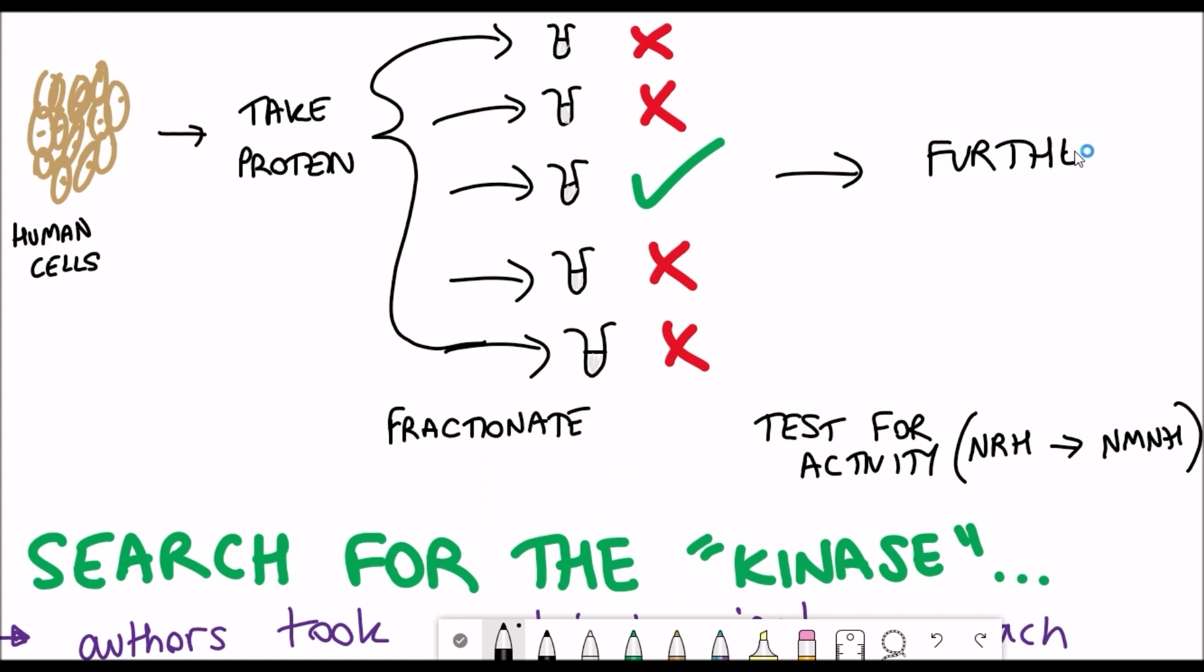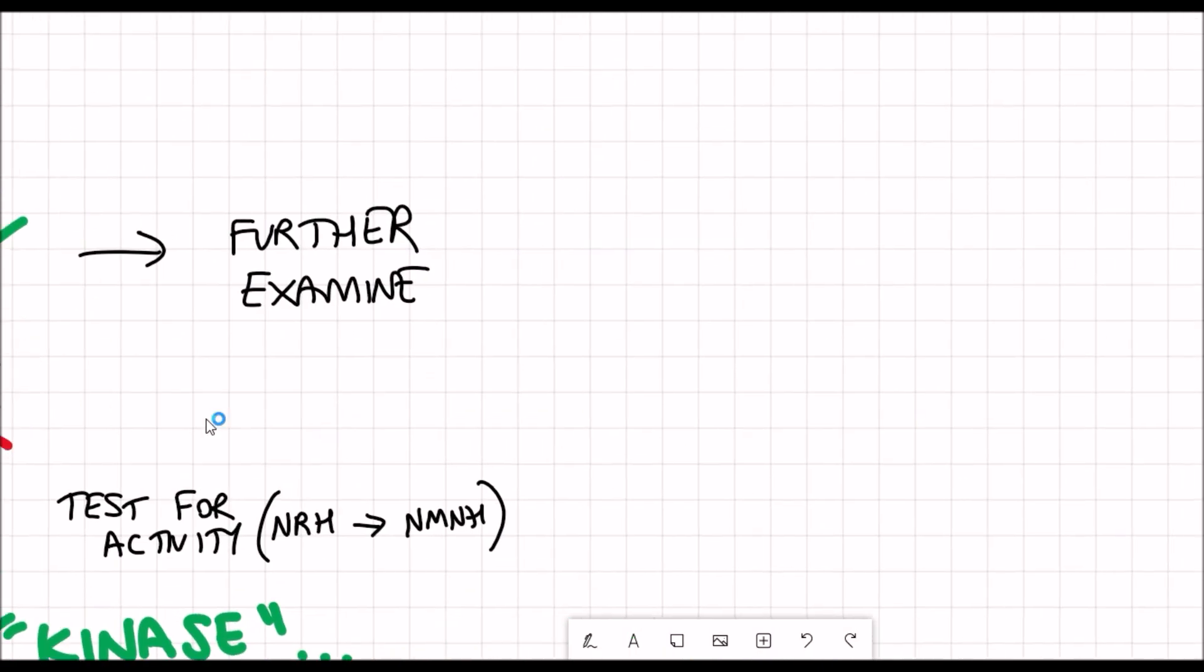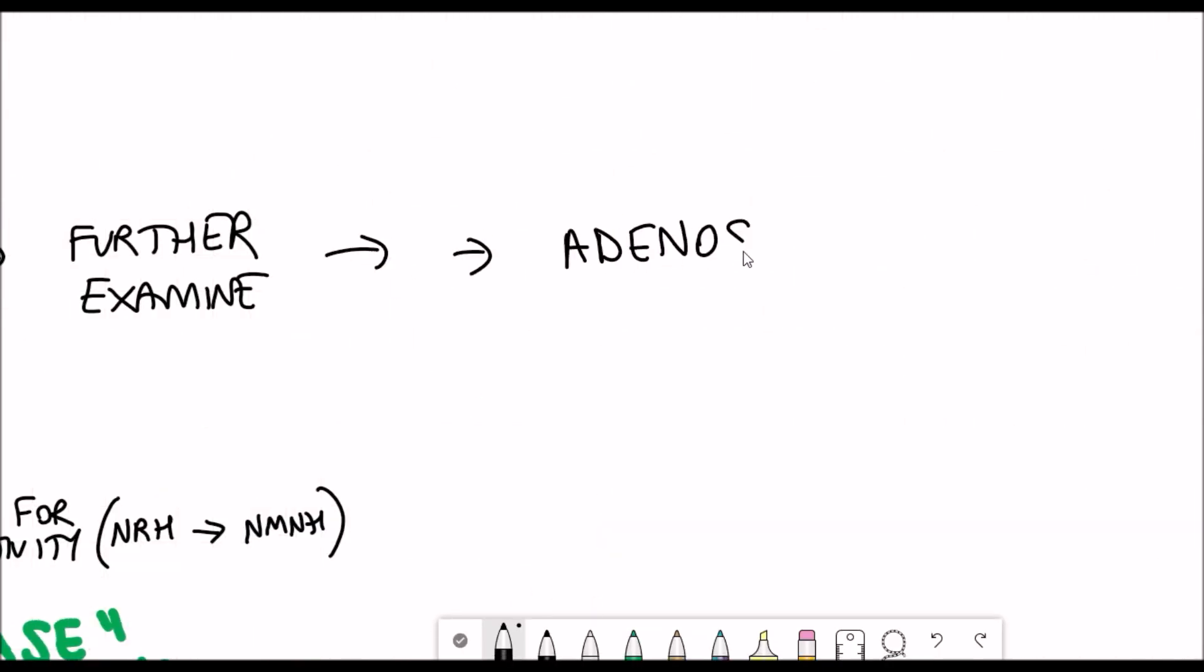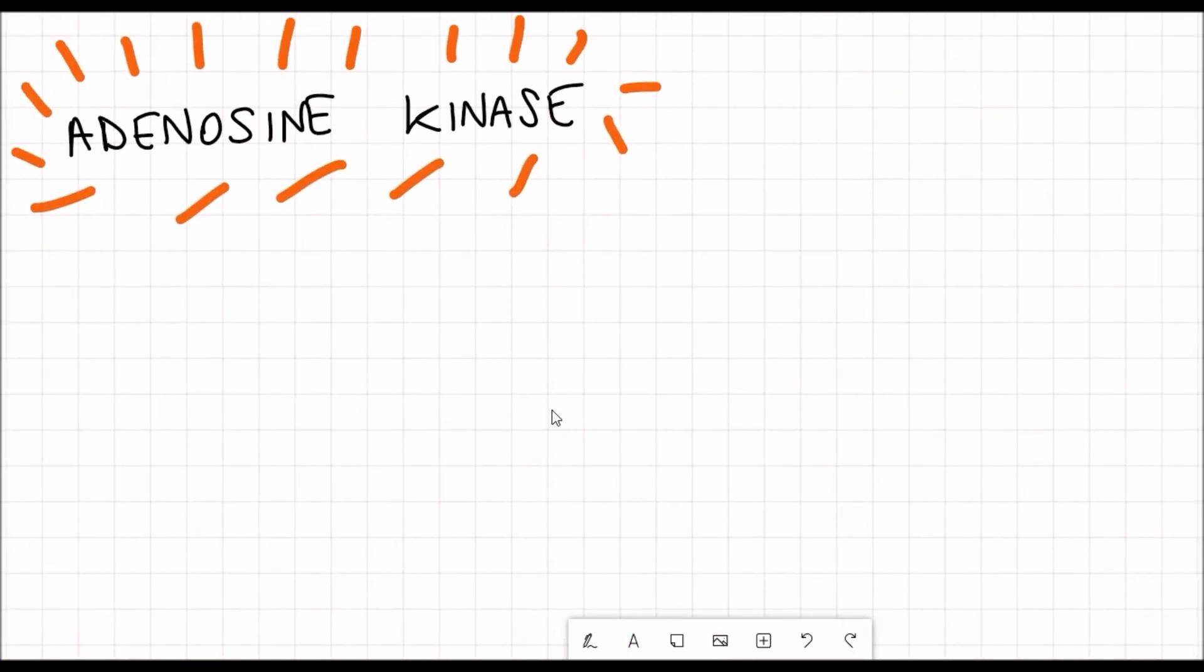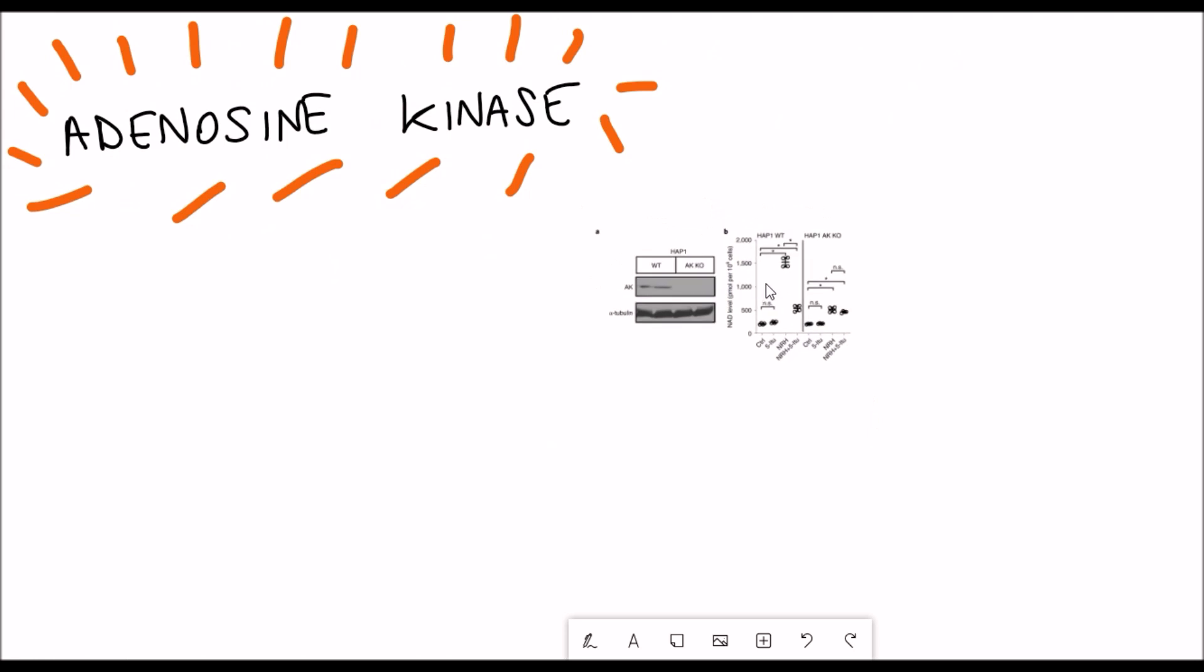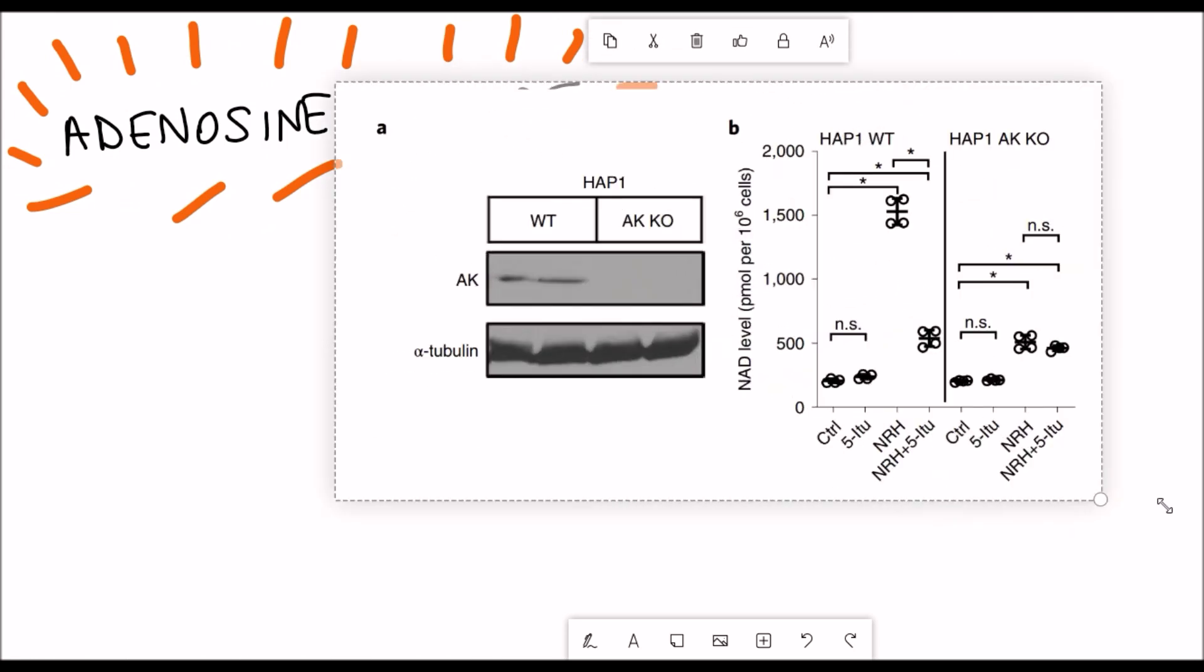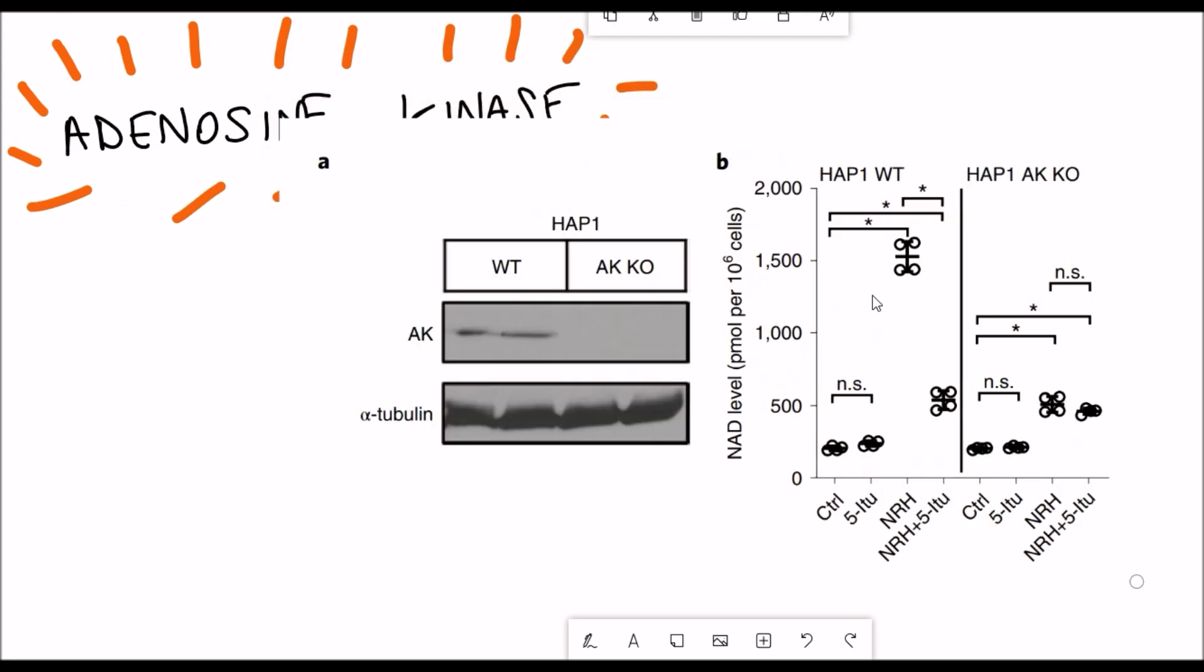In this case, the activity of converting NRH into NMNH. Some of them have it, some of them don't, but it's the ones that do have the activity that you can then further examine and see exactly what proteins are in that fraction. They did that in this case and adenosine kinase was in the fraction. I've skimmed over a lot of details, but they identified adenosine kinase in this manner.